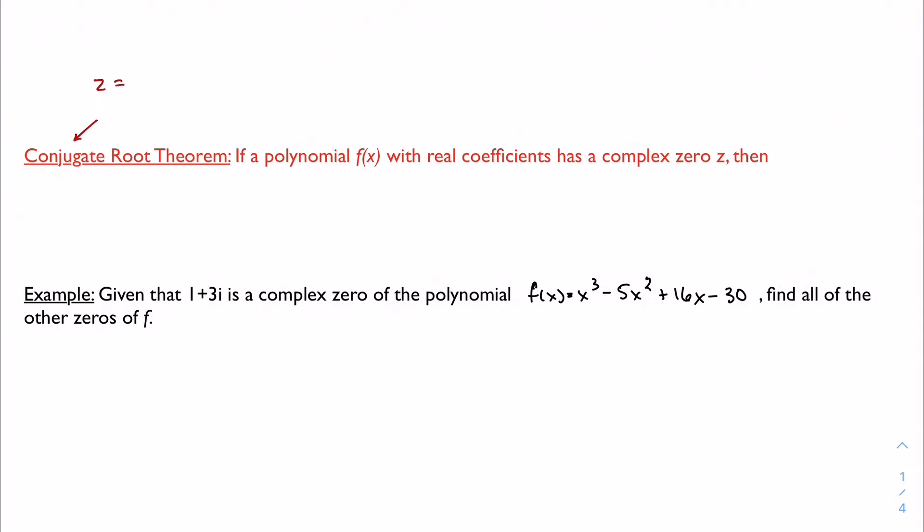If I have a complex number a plus bi, then its conjugate is a minus bi. I just changed the sign in the middle.